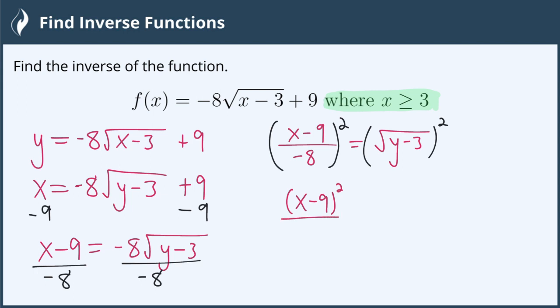And on the bottom, when I square a negative 8, negative 8 times negative 8 is a positive 64. On the right side, my square root and my square have canceled and have left me with y - 3.